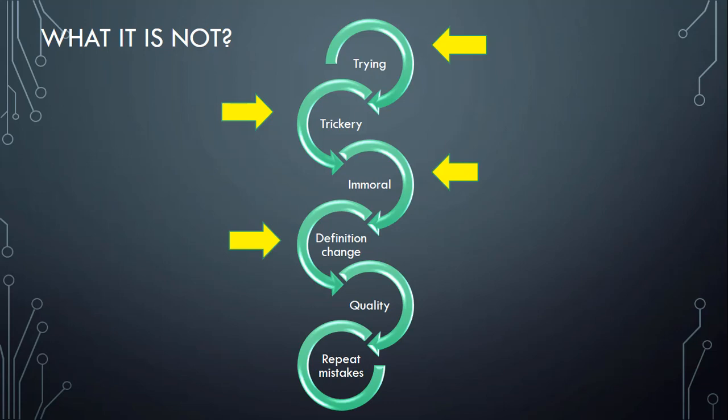It is not about changing the definition of results by drastically reducing them to show achievement. For example, instead of specifying an original sales target of one million dollars, a person reduces it by 60 percent to show the target is achieved — but this helps neither the person nor the organization. Changing the definition of results to show achievement may seem to work, but it never does. This is trickery, which is wrong and irrational. Trickery never adds value; instead, it breaks trust and creates problems.